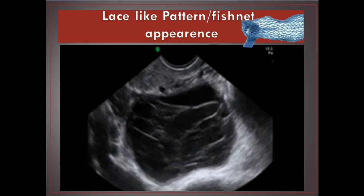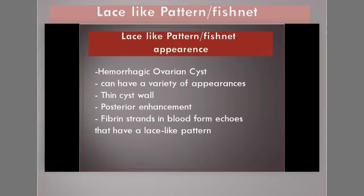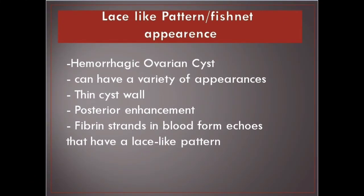Lace-like pattern. Hemorrhagic ovarian cyst can have a variety of appearances: thin cyst wall, posterior enhancement, and fibrin strands and blood form echoes that have a lace-like pattern.